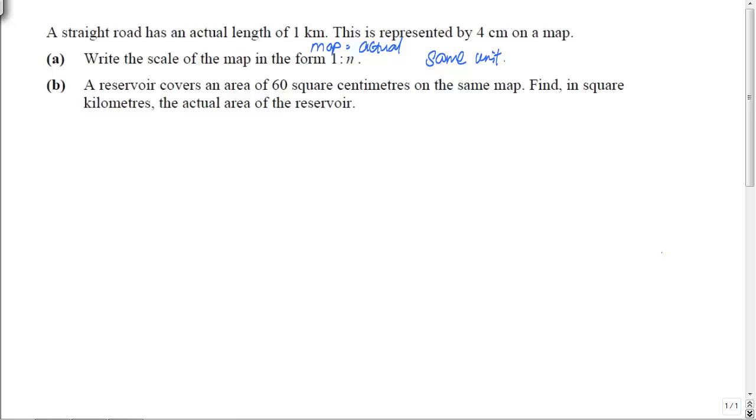So in this case, to answer part A, what I'm going to do is, the length on the map, which is 4 cm, is going to be the first number I'll put on the left, is to the ratio of 1 km, which is the actual length itself.